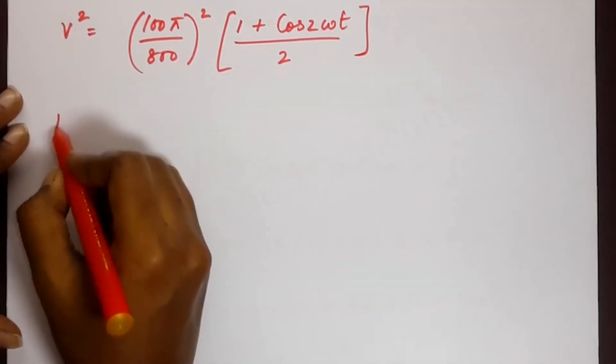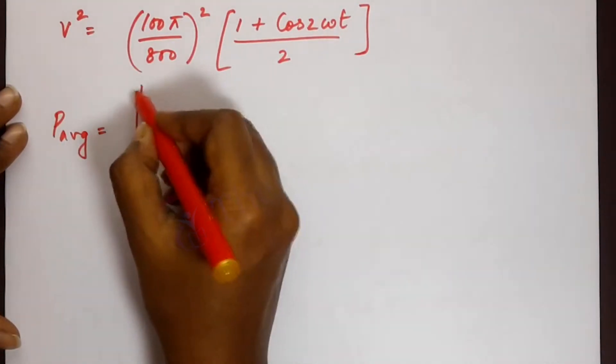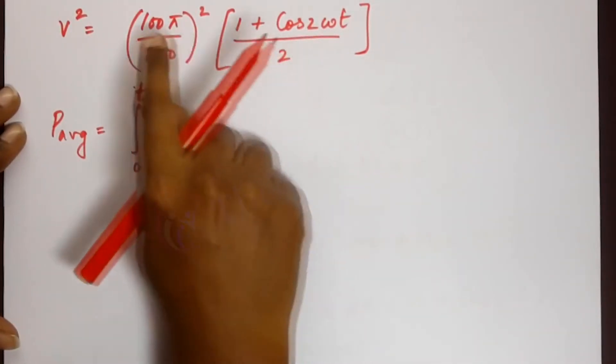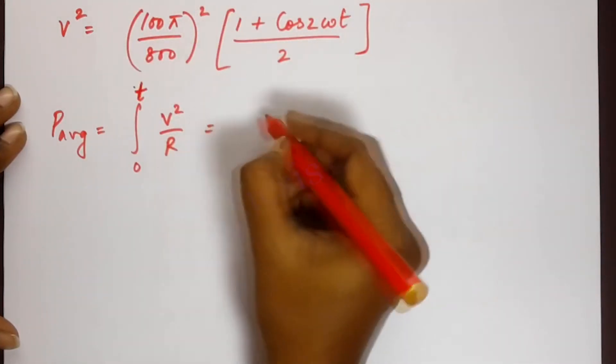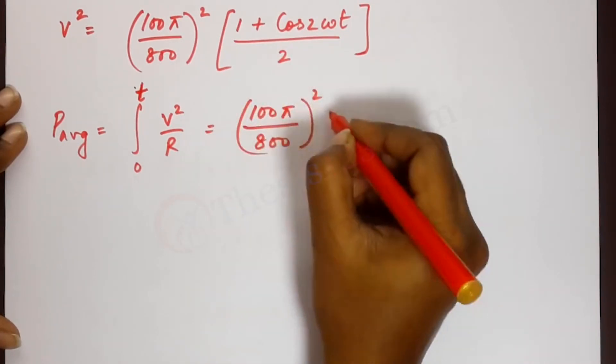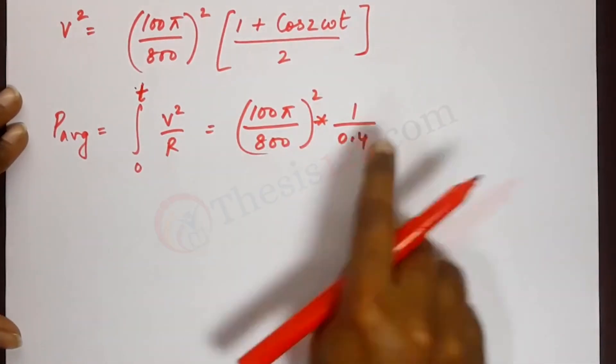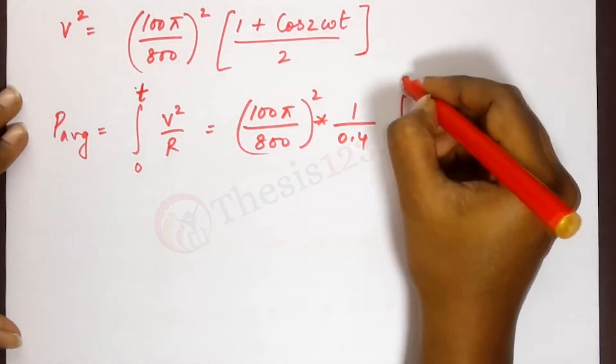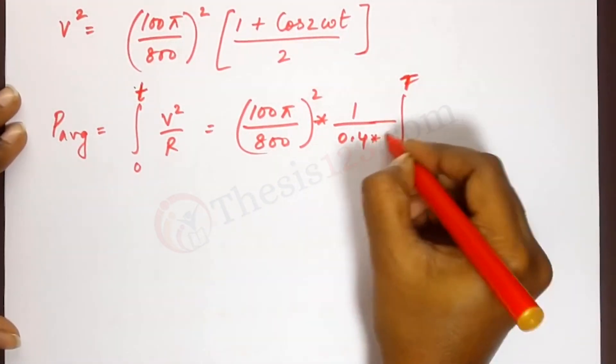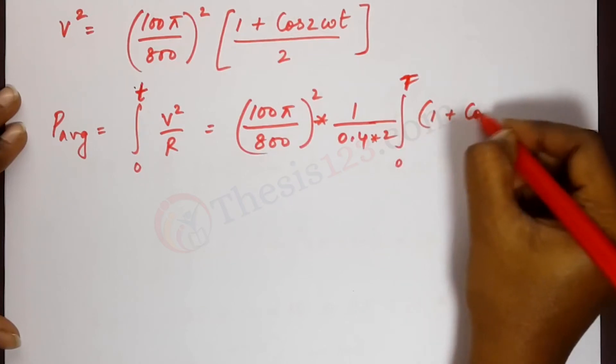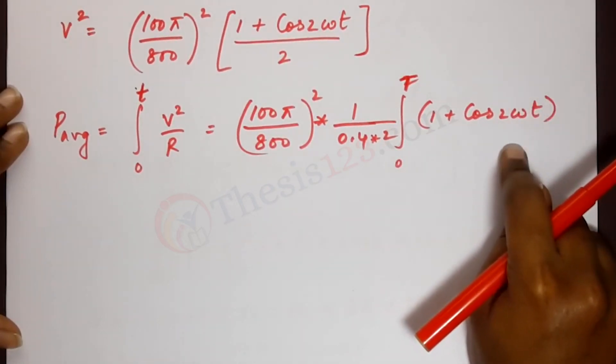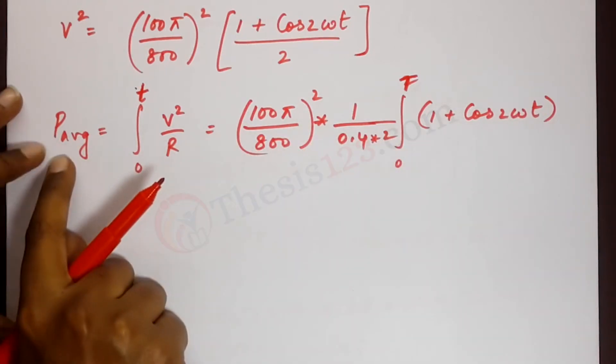Now the power equation, power average is integral of 0 to t v square by r. Now I'm going to plug in this entire expression in terms of v here. So let's write the constants out. So that's 100 pi by 800 whole square, 1 by 0.4 that's r, integral of 0 to t. So we have 2 here which is also a constant. So we'll put that down here as well. 1 plus cos 2 omega t. Now this entire part will result in another trigonometric form, a trigonometric relation.